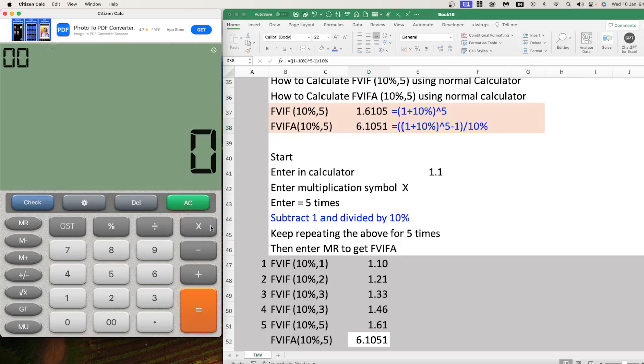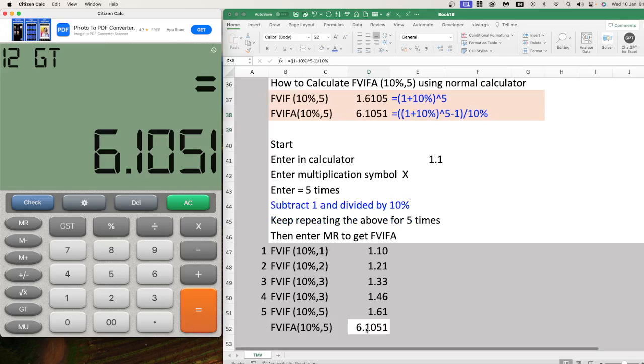Let me repeat the process. Start with 1.1, multiply, then press equals. Keep pressing equals and you will get 1.61 FVIF for the fifth year. Now subtract 1, then divide by 10% to get your annuity factor of 6.1051.